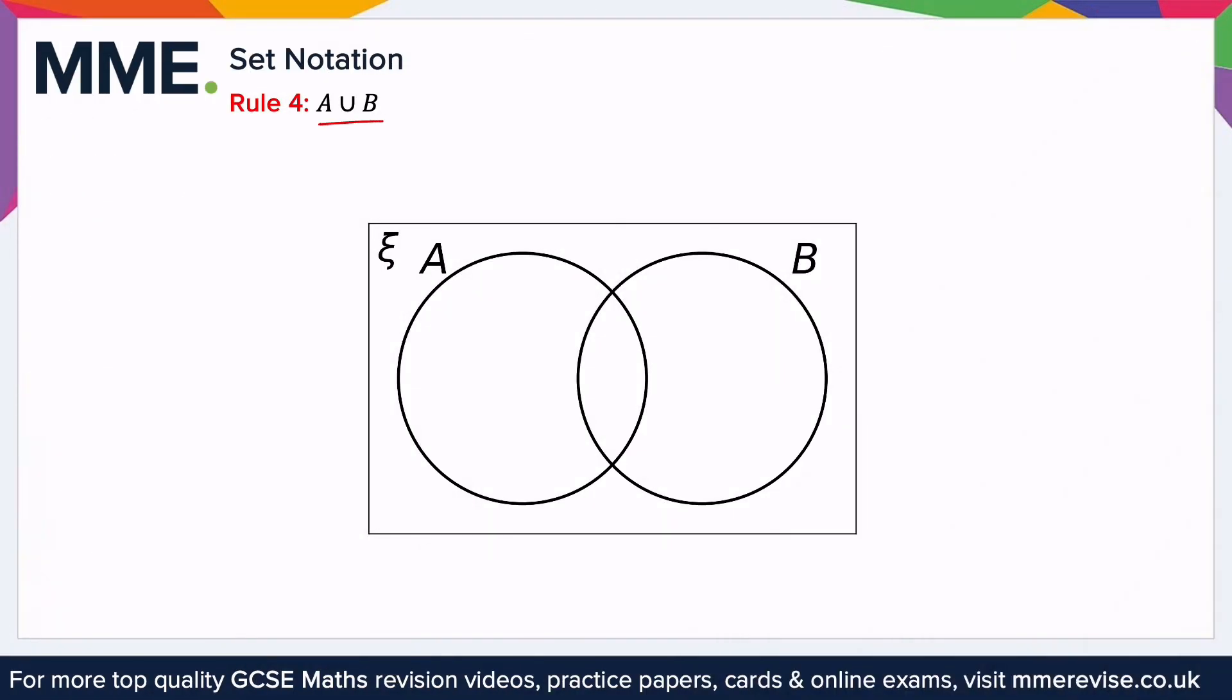This piece of notation reads as A union B. This is basically taking both sets, A and B, and putting them together. So for example, if A was the set 1, 2, 3, and B was the set 4, 5, 6, A union B would put both of these together.